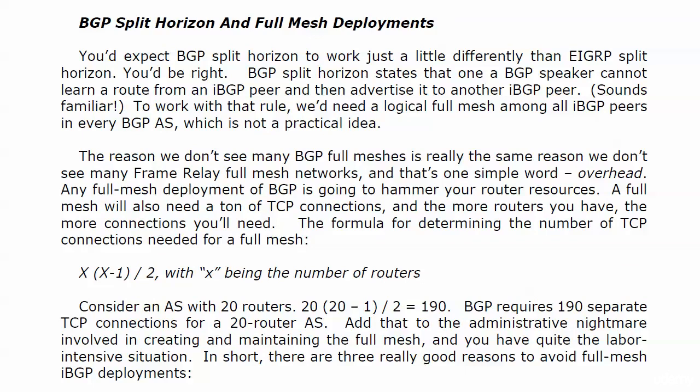To work with that rule, we would need a logical full mesh among all our internal peers in every BGP AS, which is simply not practical — it's a terrible, awful idea. The reason you don't see many BGP full meshes is really the same reason you don't see many frame relay full mesh networks: overhead. Any full mesh deployment of BGP is going to hammer your router resources, and as the full mesh gets bigger, the chances of a misconfiguration become larger and larger. You end up doing a lot of unnecessary troubleshooting.